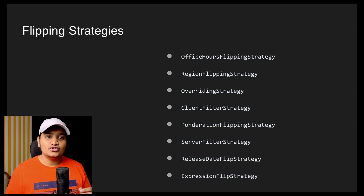The next very important one is the Expression flipping strategy. This is used to mix and match the different strategies. Suppose I want to enable a particular feature only in the Europe region and for only 10 percent of users — at that time I can use the Region flipping strategy and Ponderation flipping strategy together using the AND operator. There are AND, OR, and NOT operators available, so we can combine expressions across multiple strategies.